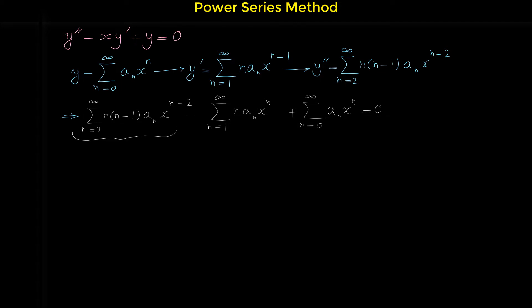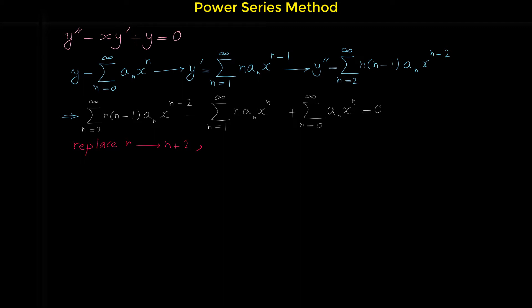If you are not familiar with shifting the index of summation, you can watch my videos on that topic. To make the power of x equal to n in the y double prime series, we replace every n in the general term with n plus two. Because we add two to n, we have to do the opposite to the starting point — that is, subtract two from the starting point.